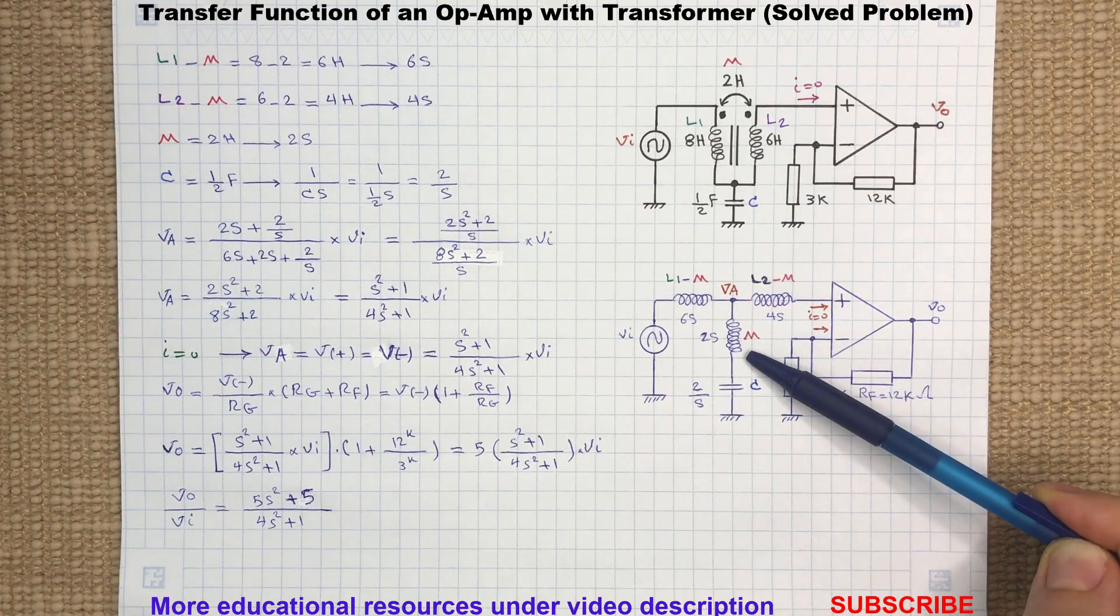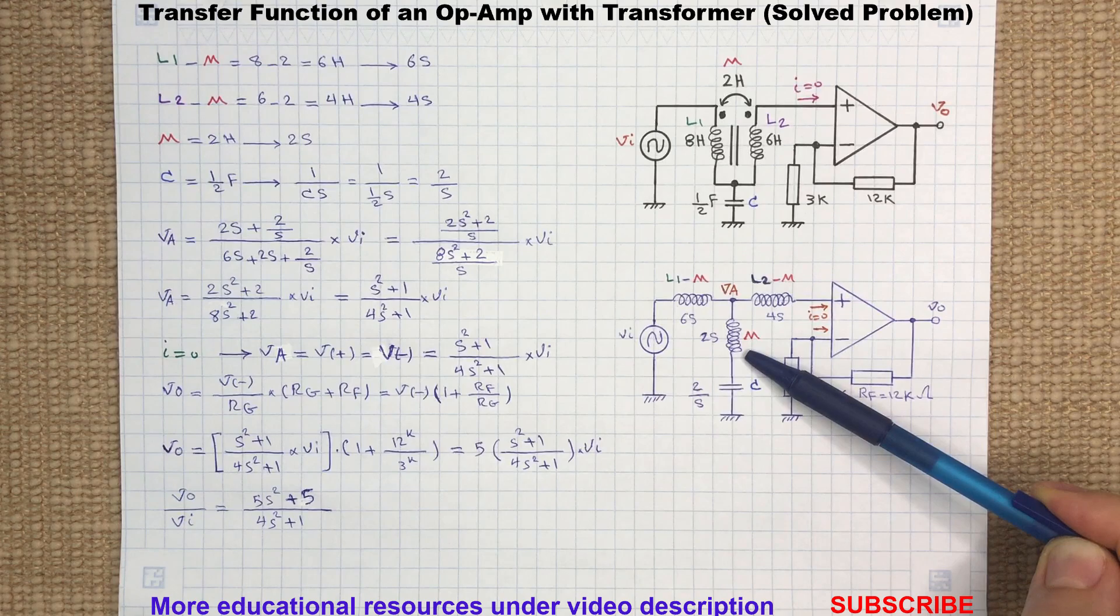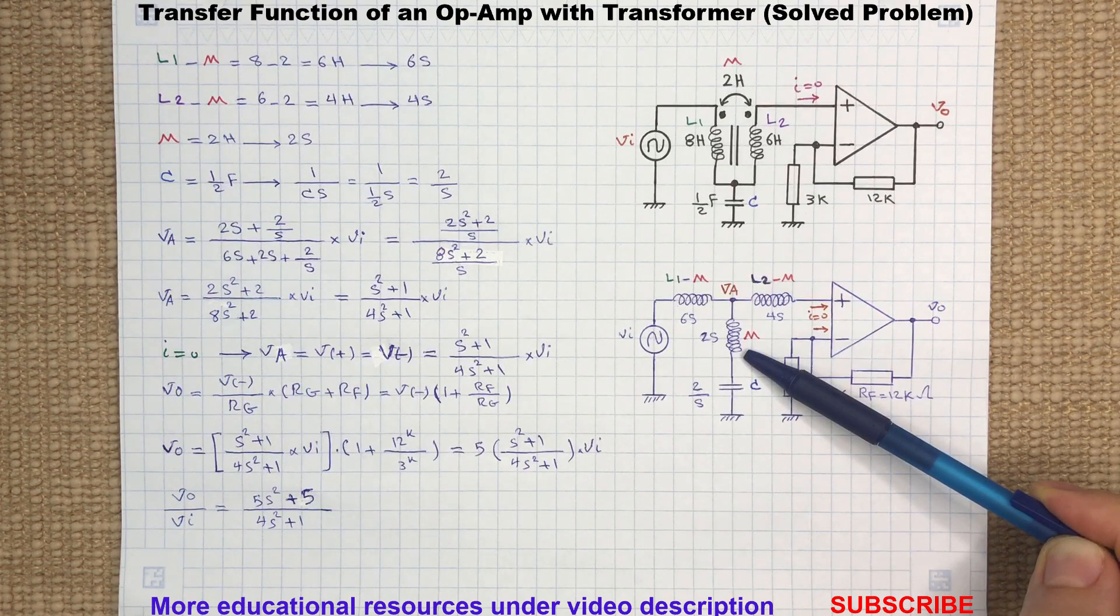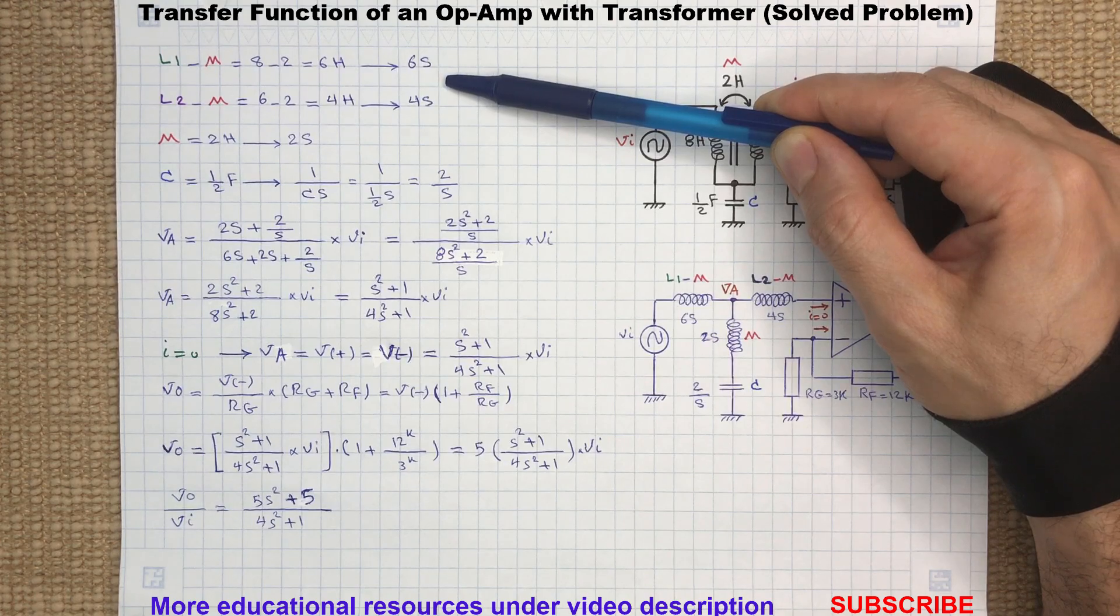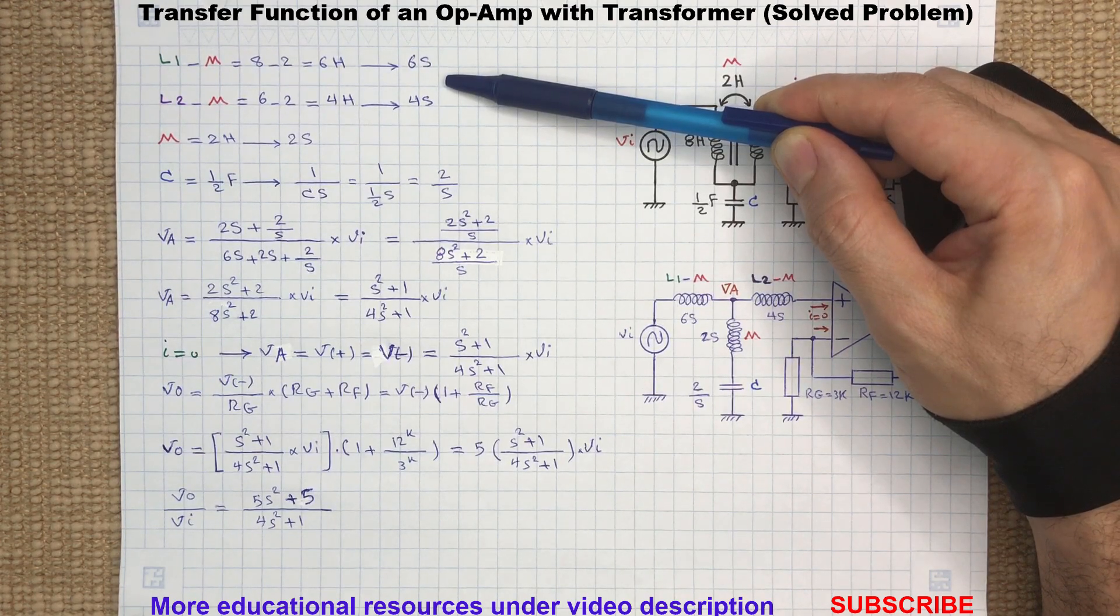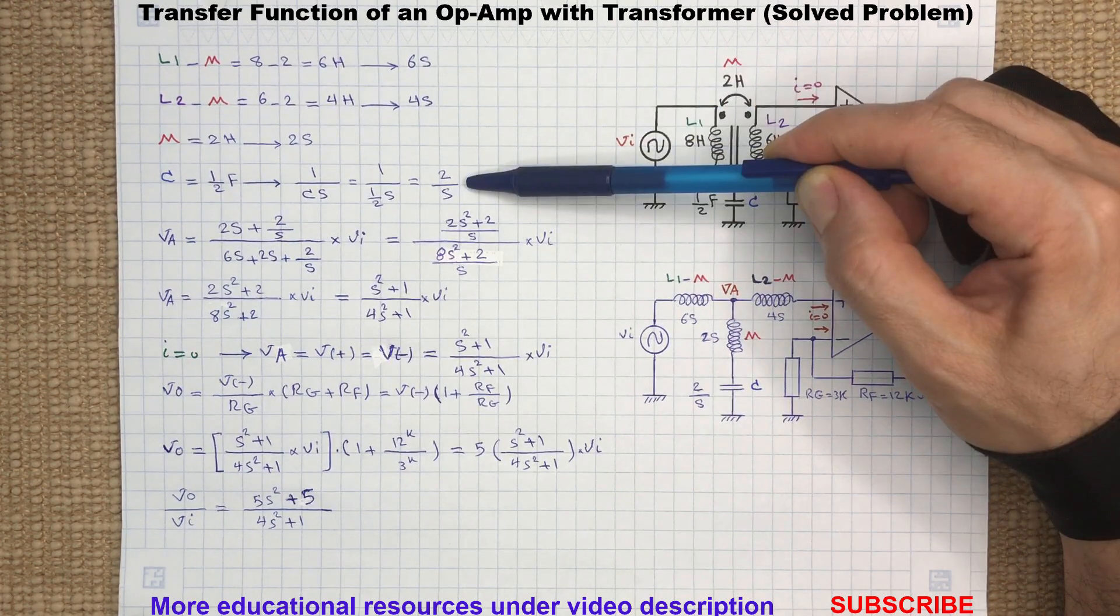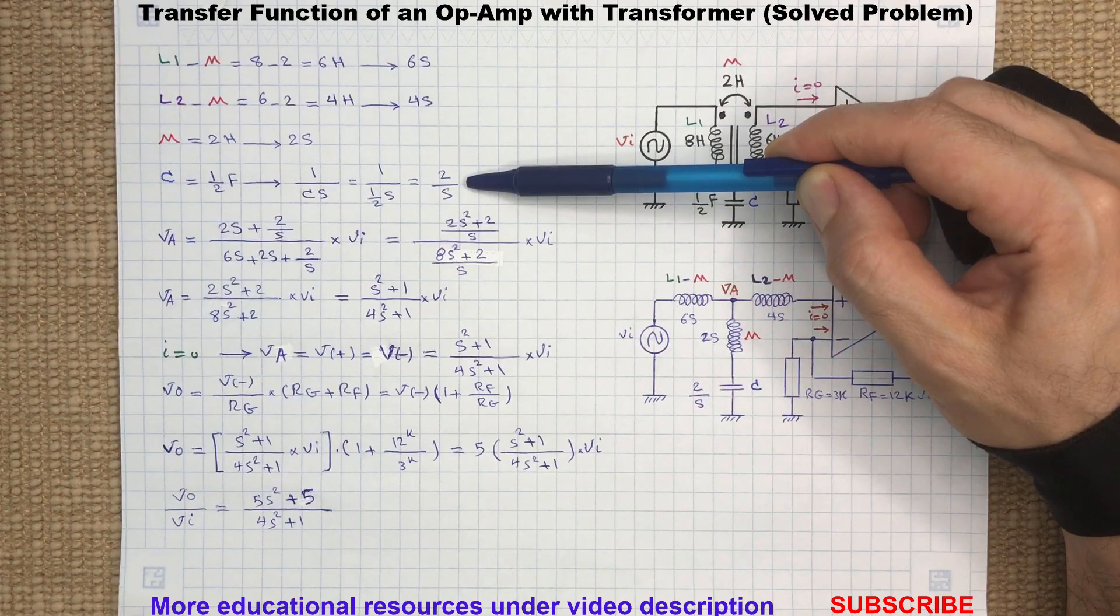We bring the mutual inductance M here to be connected to the capacitor without any changes. The Laplace transform of an inductor is LS, which means multiplying the inductance by variable S, and the Laplace transform of a capacitor is 1 over CS.